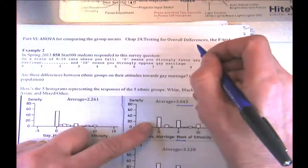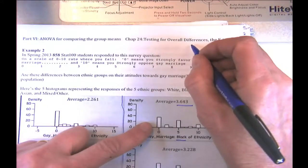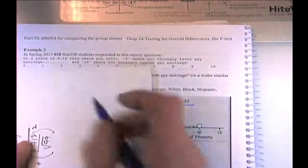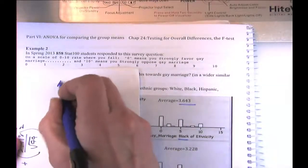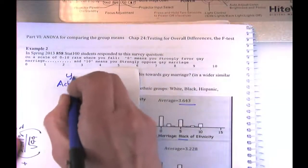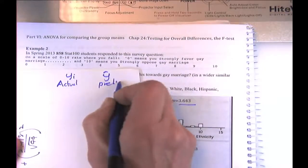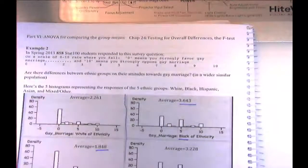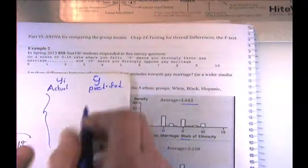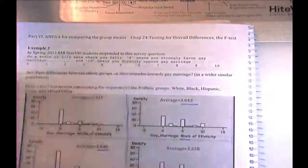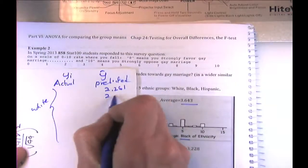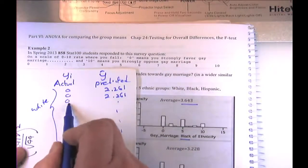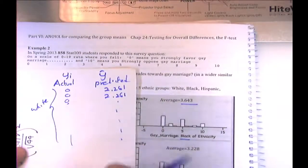If you did the correlation between those two sets of numbers — actual ratings and predicted ratings — it would look like this: one set has each person's actual rating, the other has their group's mean repeated. For all whites, for instance, the predicted value would be 2.261 for every white student, while their actual ratings vary widely.